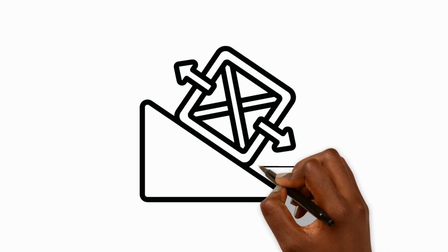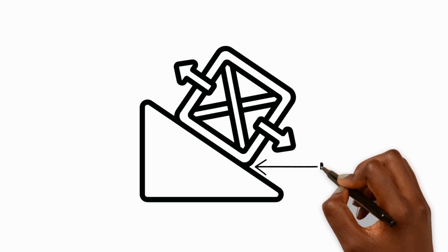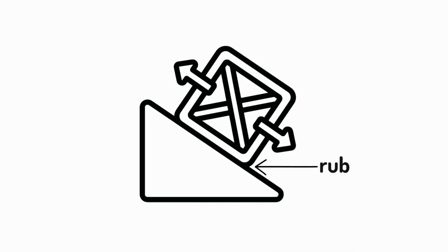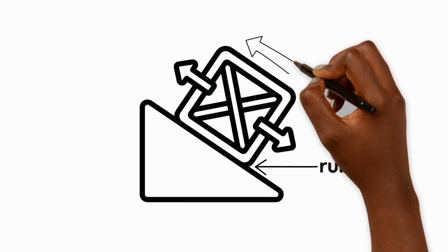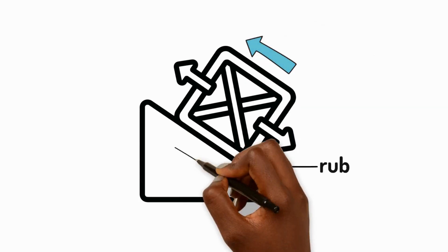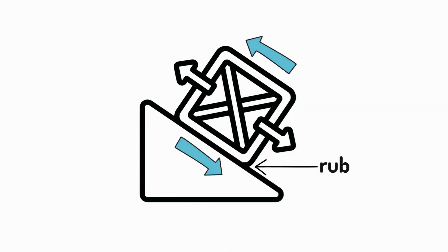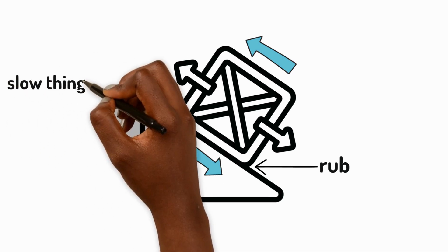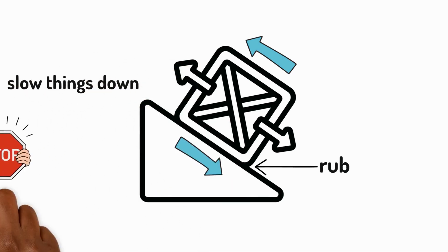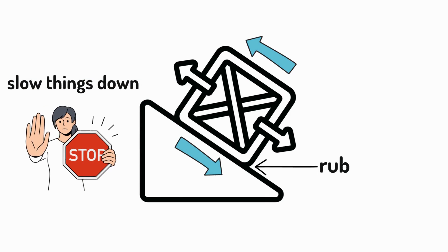Friction is an invisible contact force that appears whenever two surfaces rub together. The surfaces move in opposite directions to one another. Friction tries to slow things down or stop them altogether.